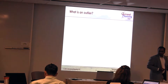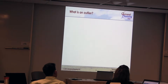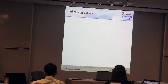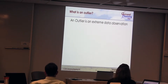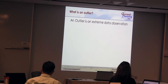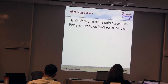You need to have a method to identify outliers. We'll talk about how to identify them and what corrections you need to make. The outlier identification process is a statistical process. Defining an outlier: it's an extreme observation that is not expected to repeat in the future — that's what we know.